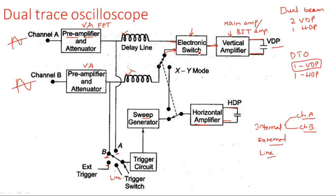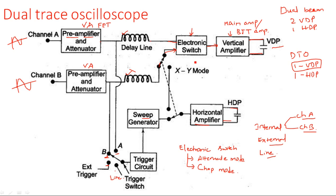The electronic switch operates in two modes: alternate mode and chop mode. The purpose of the electronic switch is to select Channel A and Channel B continuously or alternatively, so that whenever the switch is connected to Channel A, Channel A is displayed on the vertical deflection plate, and whenever connected to Channel B, Channel B is displayed.